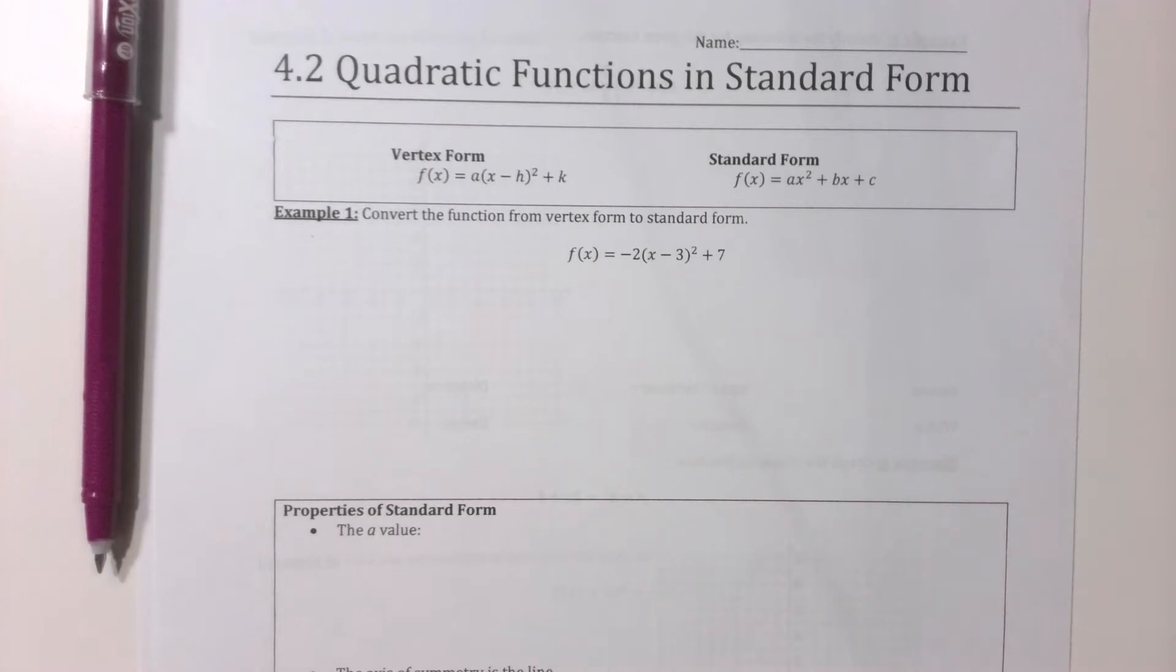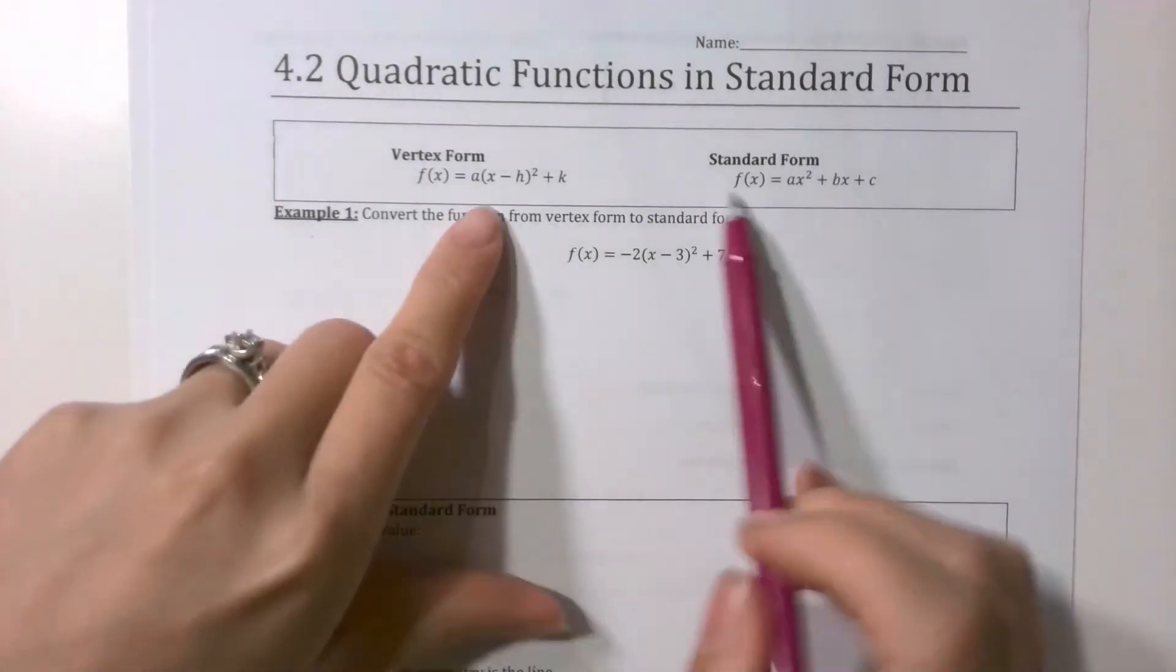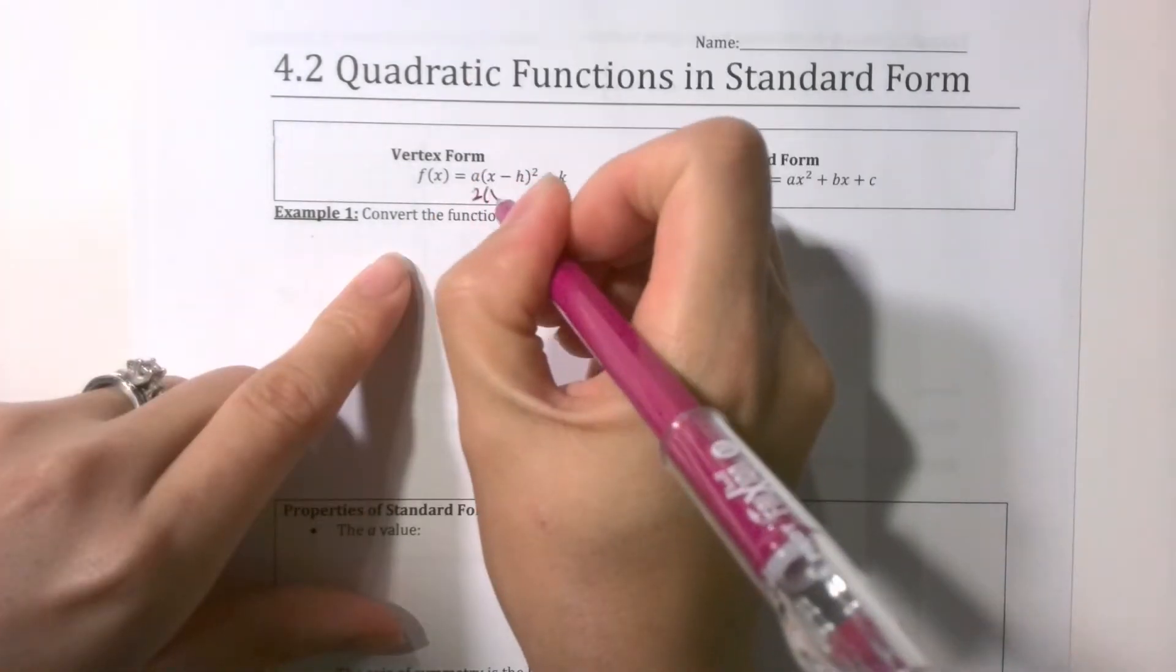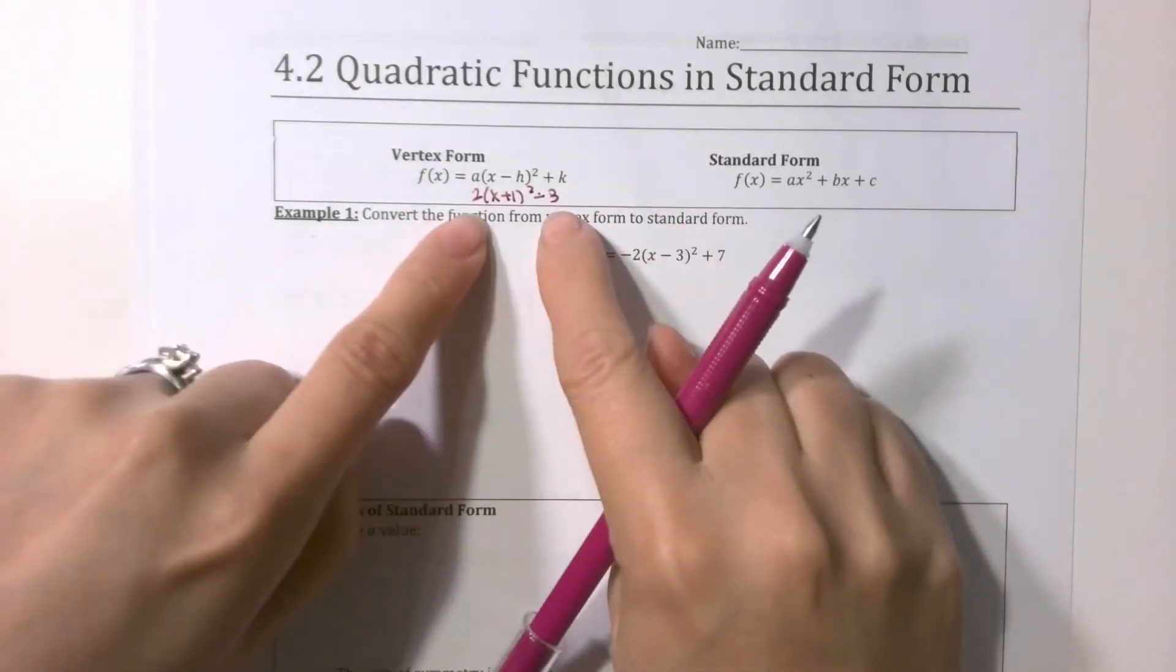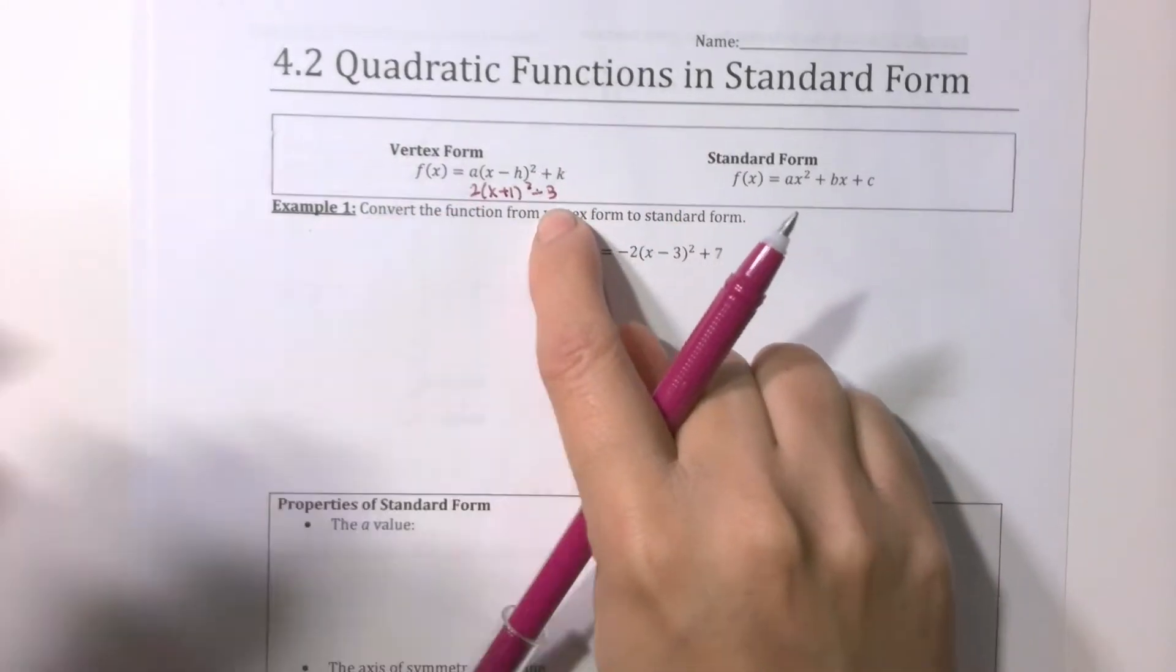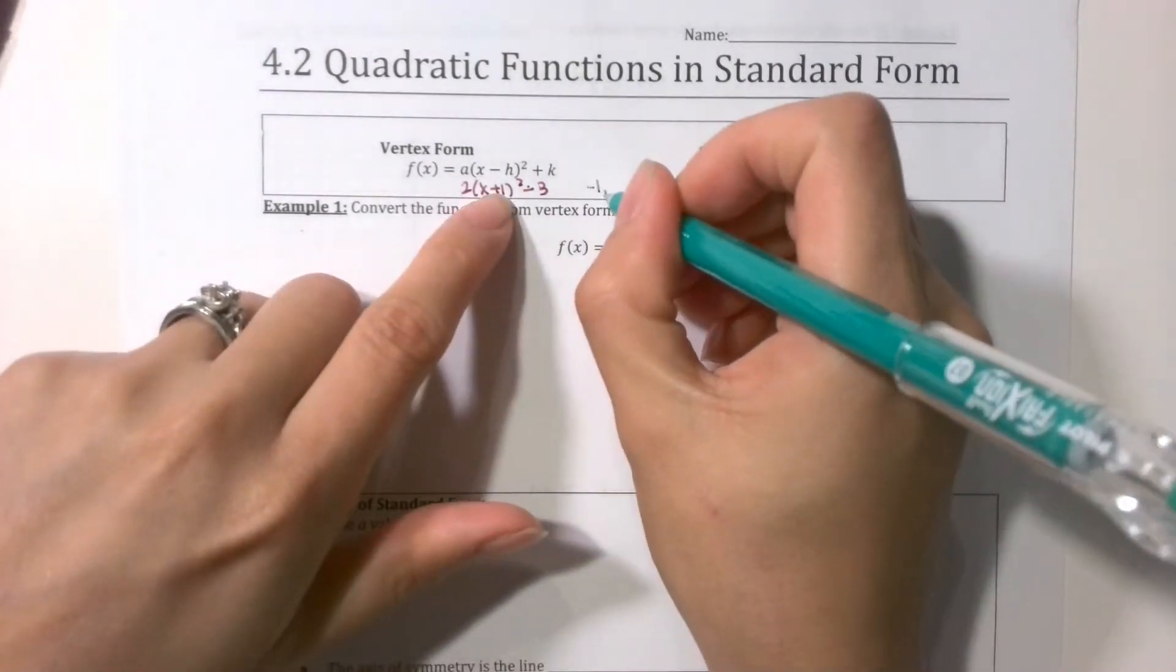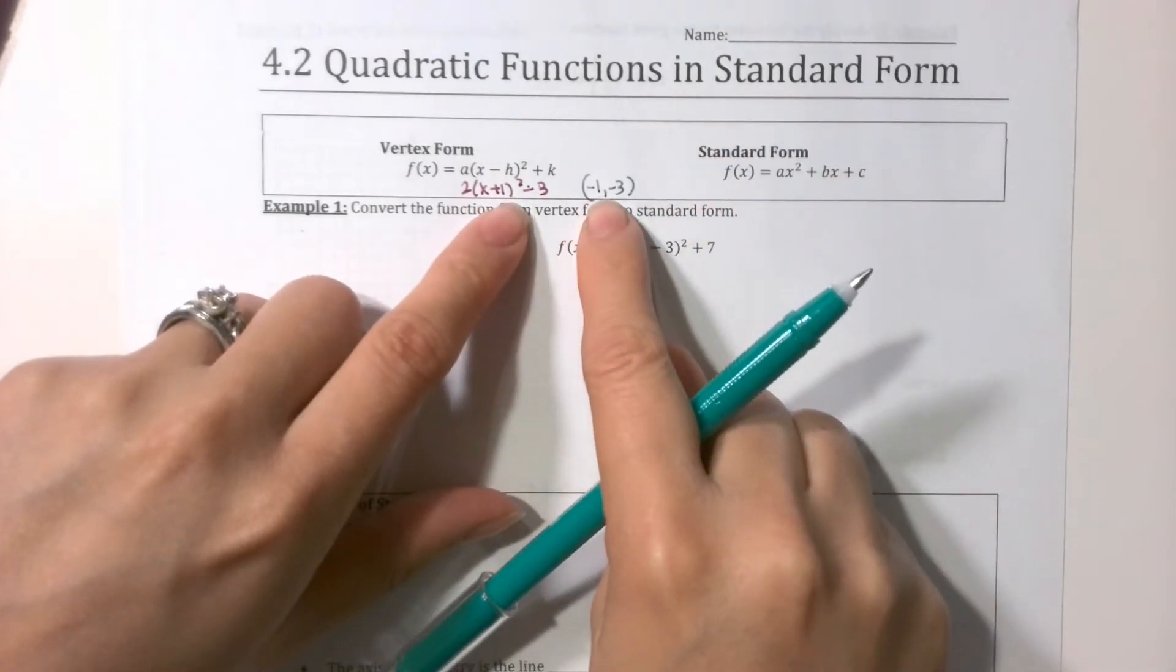4.2 quadratic functions in standard form. So 4.1 was all about the vertex form, right? We did something like 2(x+1)² - 3. That's a quadratic function in vertex form. For this instance, the vertex was going to be negative 1 comma negative 3. So when it's in the vertex form, it's easy to find out what the vertex is.